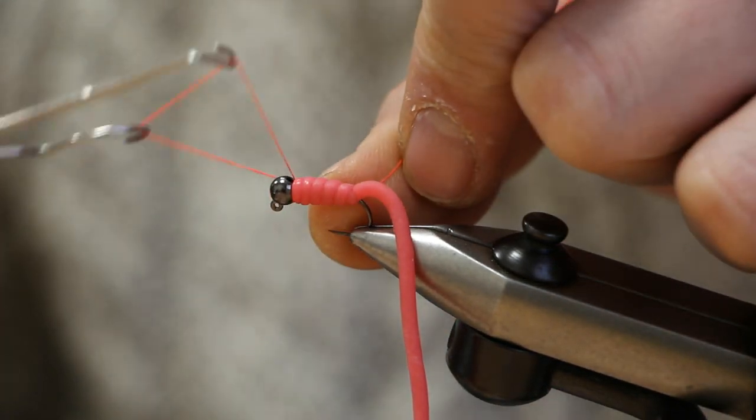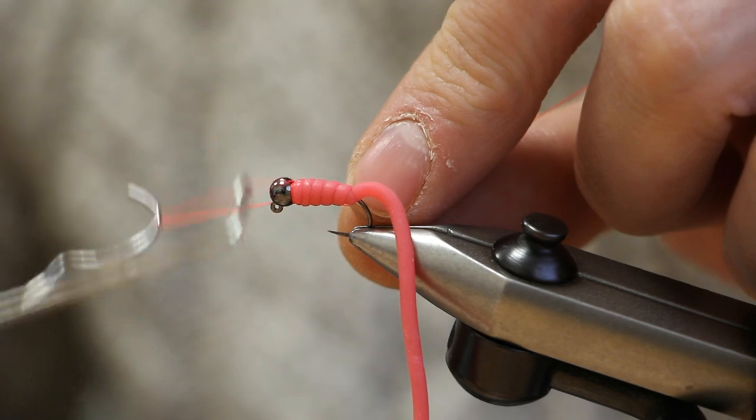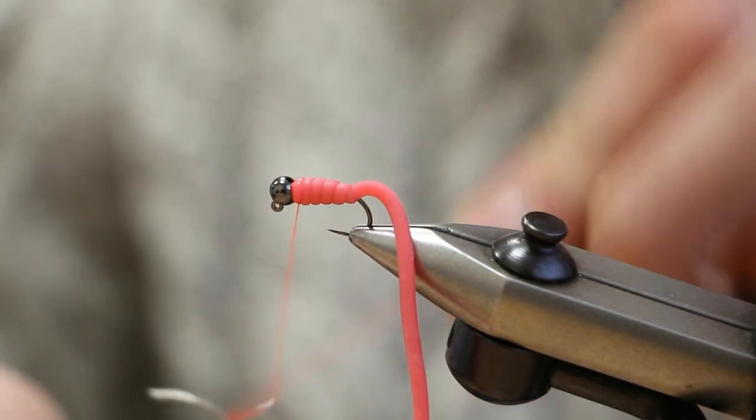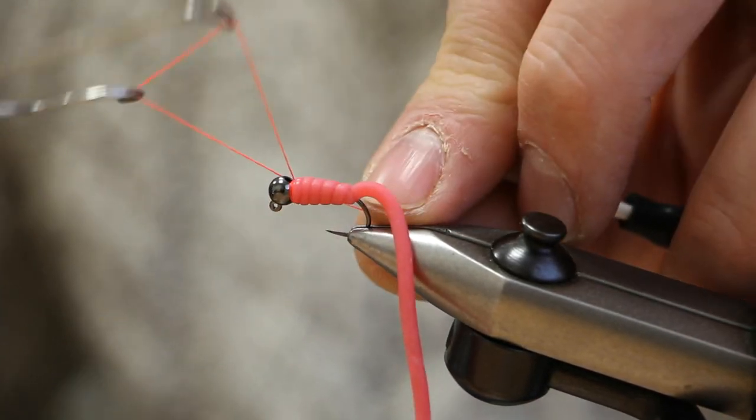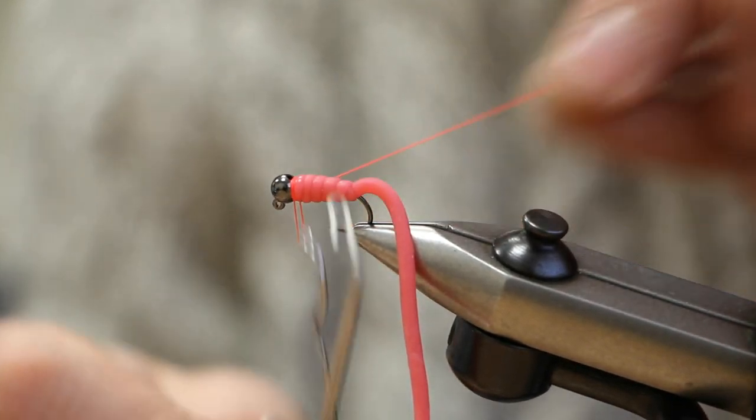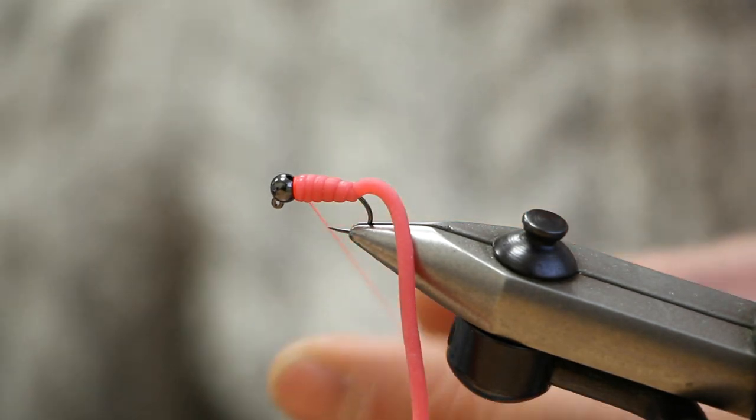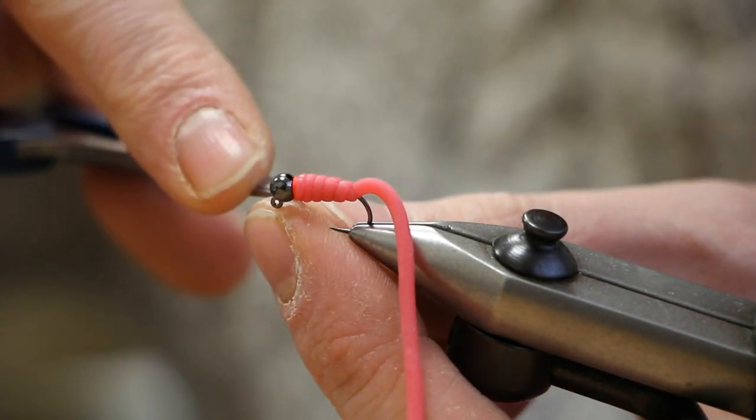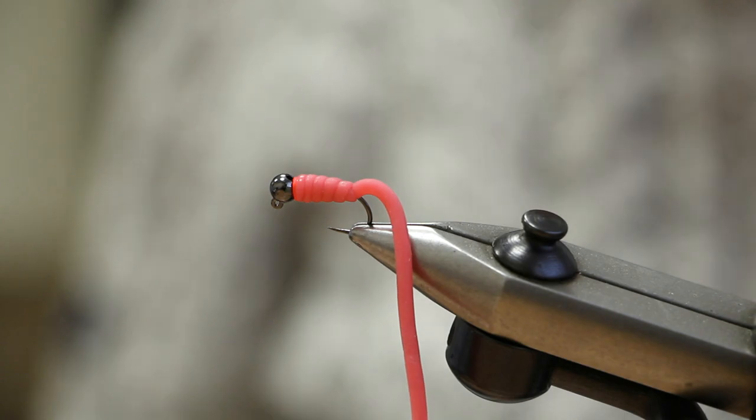Now whip finish. I did this twice because you can't put any varnish or super glue on this fly. There's the finished squirminator.